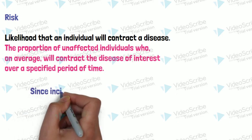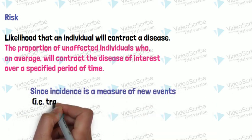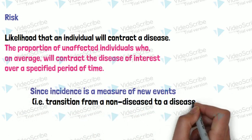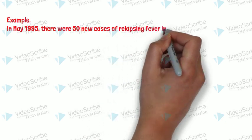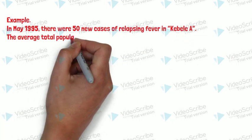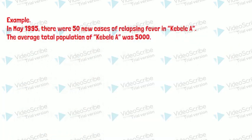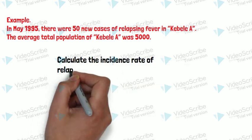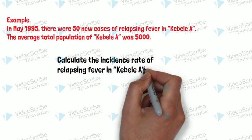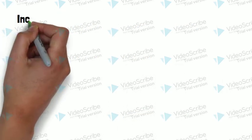Let us see an example. In May 1995, there were 15 new cases of relapsing fever in Kavali. The average total population of Kavali was 5,000. Calculate the incidence rate of relapsing fever in Kavali in 1995. The incidence rate is calculated as 50 over 5,000 times by 1,000. The outcome will be 10 new cases per thousand populations.